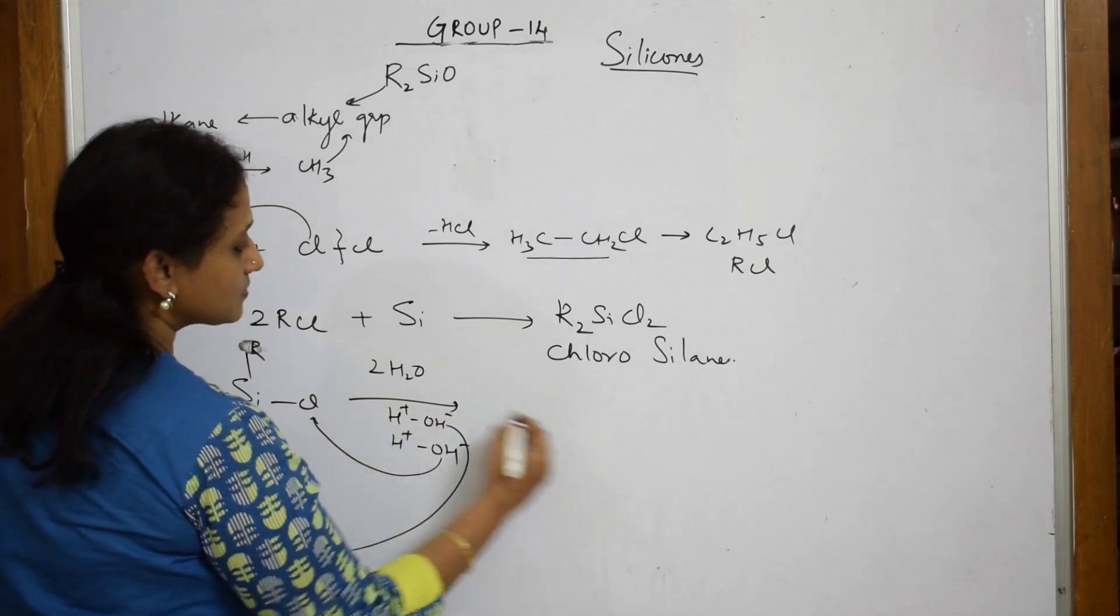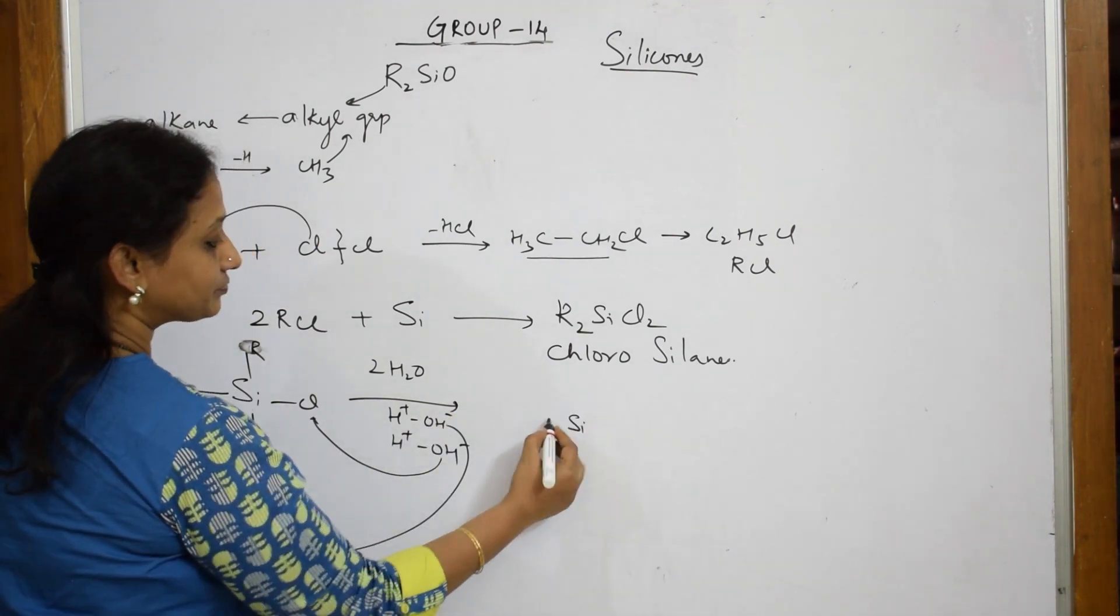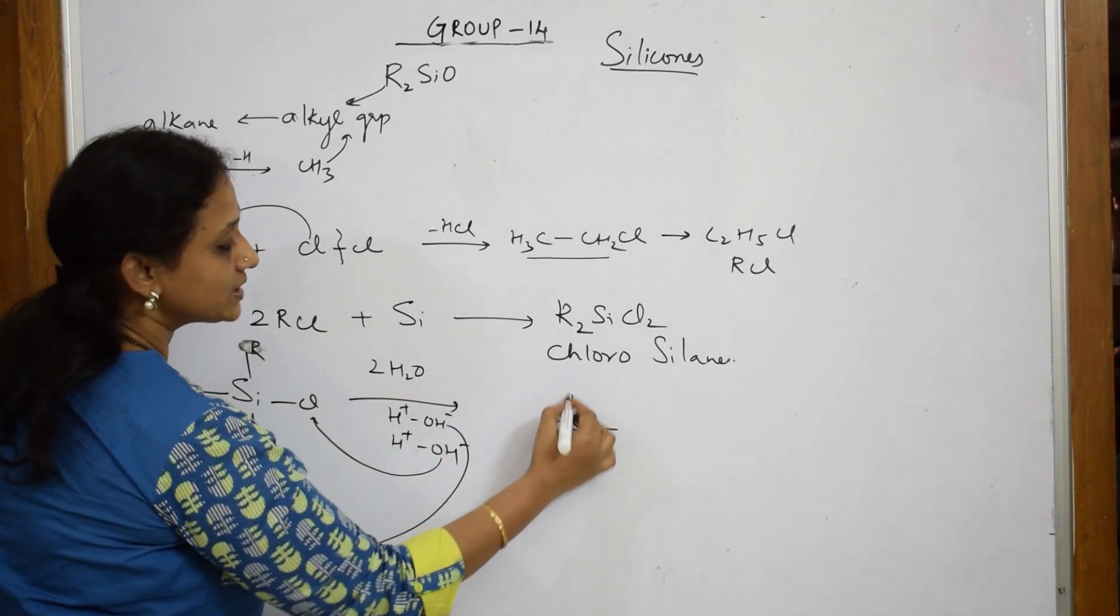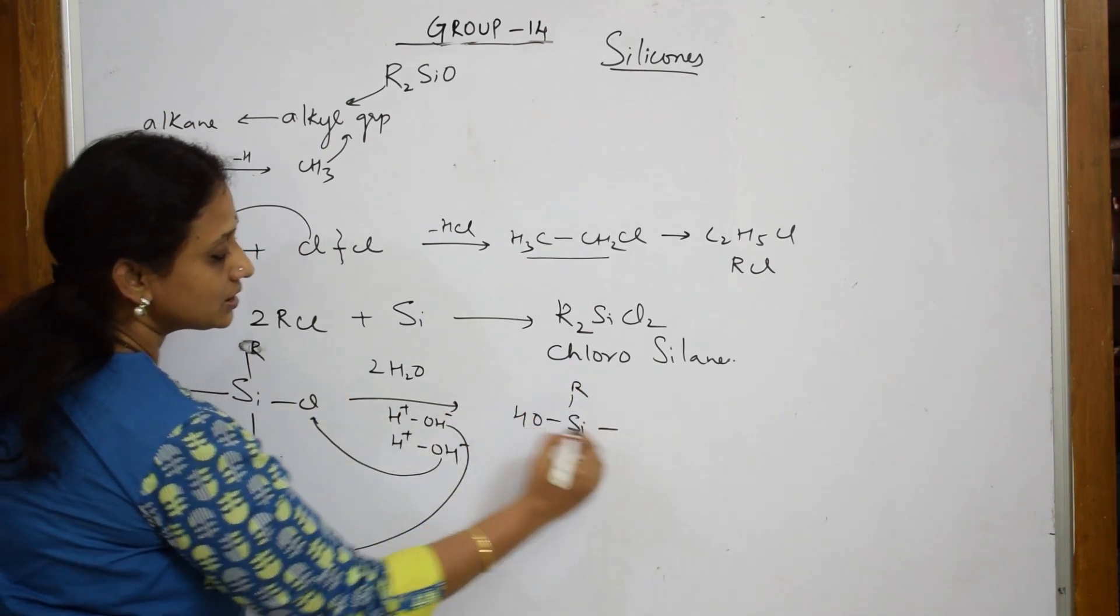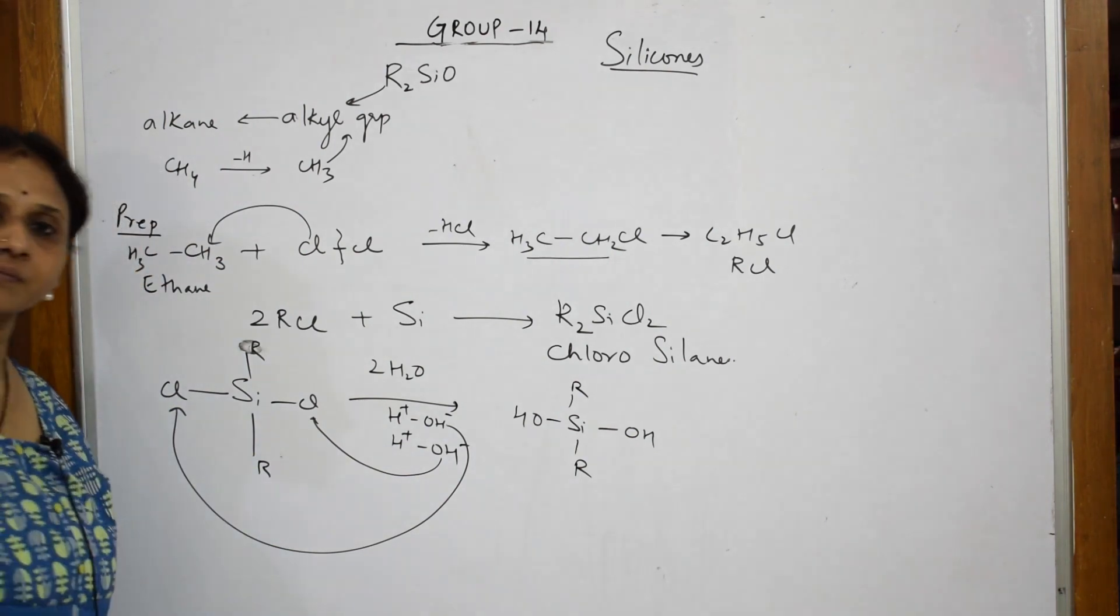So, what do I get now? I get Si. Your R group is still there. Your R group is still here. Your R group is here. OH is here and OH is here.